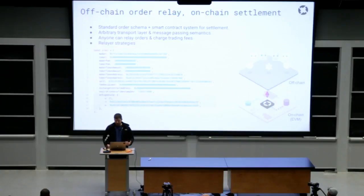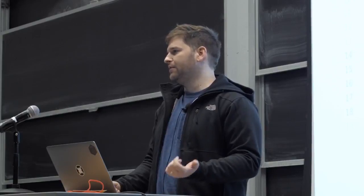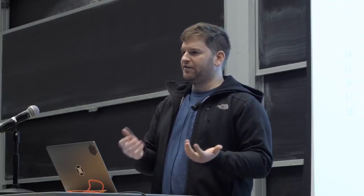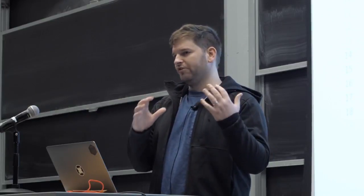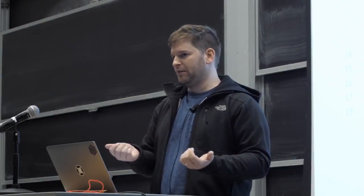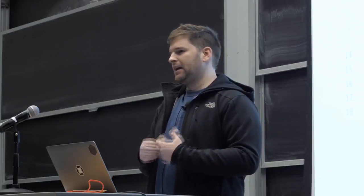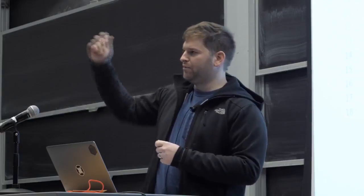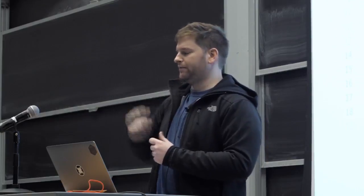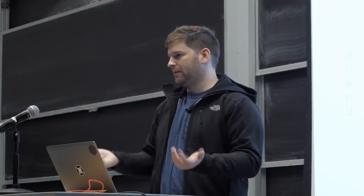There are a few different ways that relayers can operate. The simplest is hosting what we call an open order book, similar to Ether Delta, where the relayer has a database. Buyers and sellers send cryptographically signed orders to the relayer, the relayer checks that a fee will be paid out upon settlement, and it's kind of a post-it board where anyone can post an order to the order book, anyone else can see that order, take it off, and inject it into the 0x smart contracts to settle a trade.